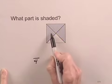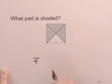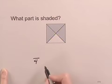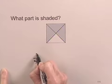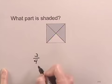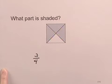We see that three parts of the four are shaded, and that tells us what the numerator of the fraction will be — it'll be three. So we would say that 3 fourths of the figure is shaded.